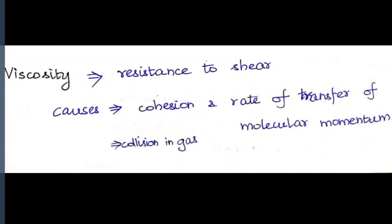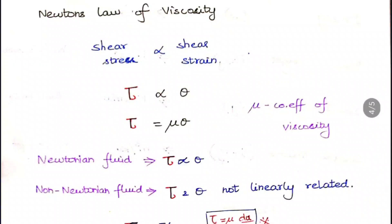Viscosity is the resistance to shear. When fluid particles move, resistance between them creates viscosity. The main causes are cohesion (in liquids) and collision (in gases, called transfer of molecular momentum). When the rate of molecular momentum transfer is higher, viscosity is higher. Newton's law of viscosity states that shear stress tau is directly proportional to shear strain theta: tau = mu·theta, where mu is the coefficient of viscosity.